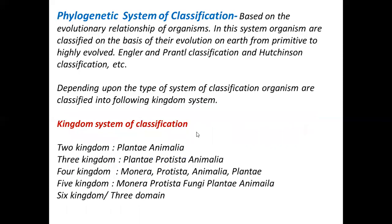The last type is the phylogenetic system of classification. In modern taxonomy, we added the evolutionary relationship of organisms. The classification based on the evolutionary relationship of organisms is called the Phylogenetic System of Classification. The key word here is evolutionary relationship.